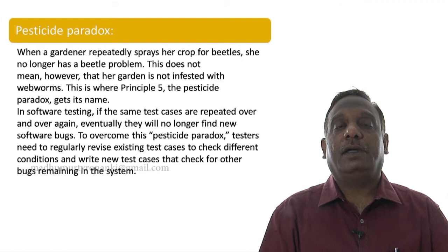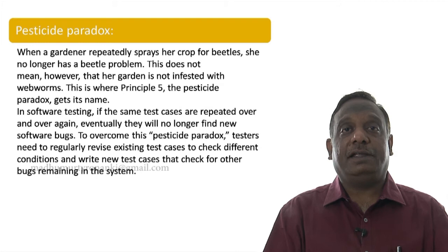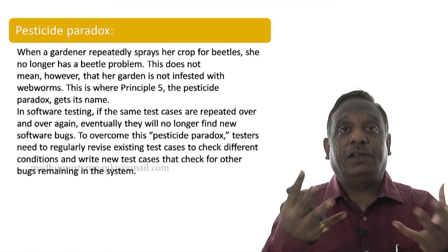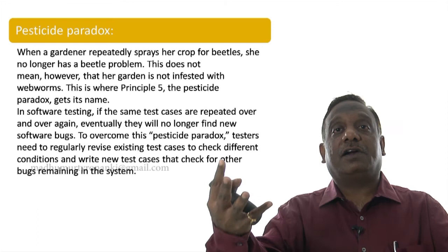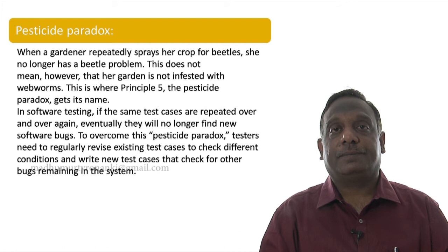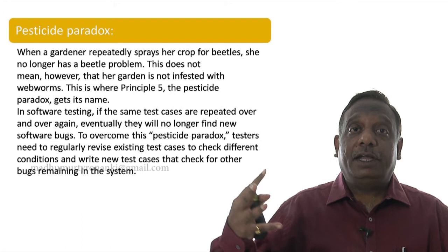Ask any farmer why this happens. They will tell you that whenever a farmer applies the same pesticide repeatedly on the same crop, the effectiveness of the pesticide reduces. Instead of killing or reducing pests, the insects essentially adapt — it becomes like an energy drink for them. Every farmer knows this.